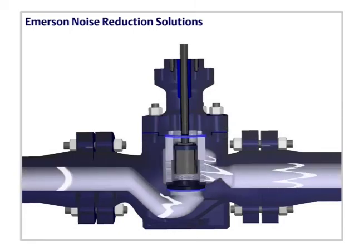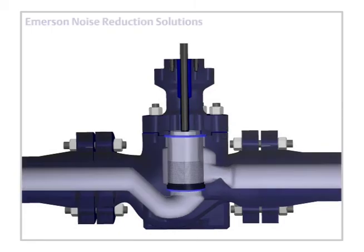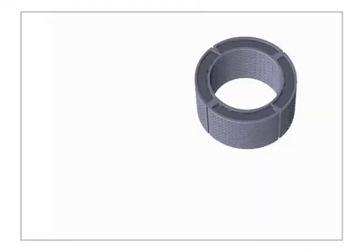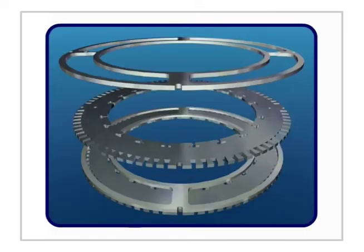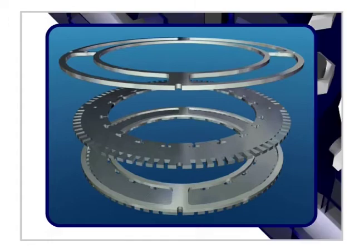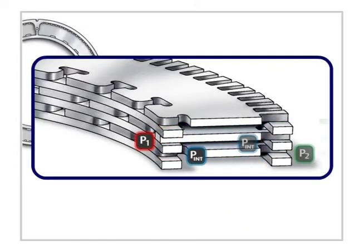Source treatments include the Fischer Whisper Flow model. Its unique passage shape reduces turbulence to minimize shock-associated noise, places turbulent shear layers away from solid boundaries to reduce dipole noise, with multi-stage pressure reduction. First stage pressure drop ratio is greater than that of the second stage.